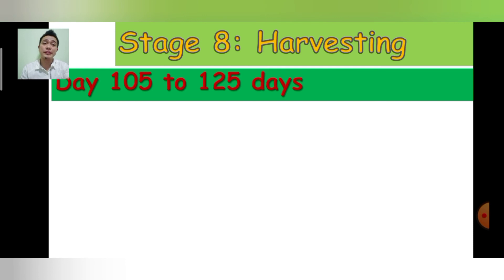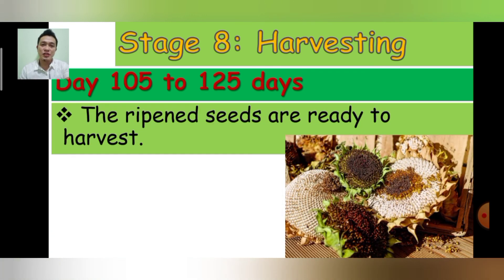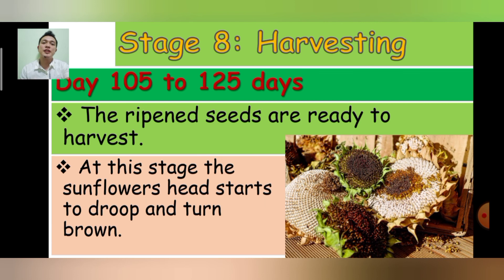Stage 8: Harvesting — Day 105 to Day 125. This is the last but not least — the harvesting process. The ripened seeds are ready to harvest. At this stage, the sunflower's head starts to drop and turn brown.